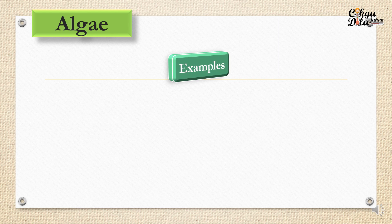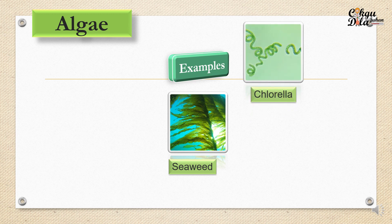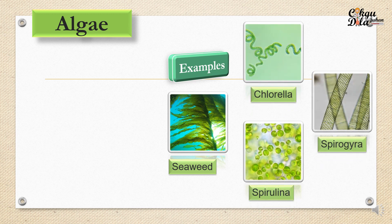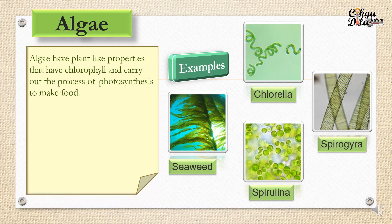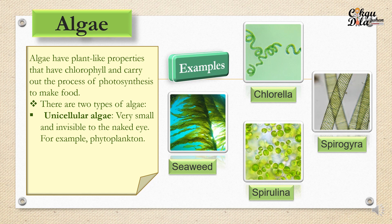The second example is algae. Here are several examples: seaweed, chlorella, spirogyra, and spirulina. Algae have plant-like properties — they have chlorophyll and carry out the process of photosynthesis to make food. That means algae can make their own food because they have chlorophyll. Once they have chlorophyll, they can carry out photosynthesis and produce their own food.